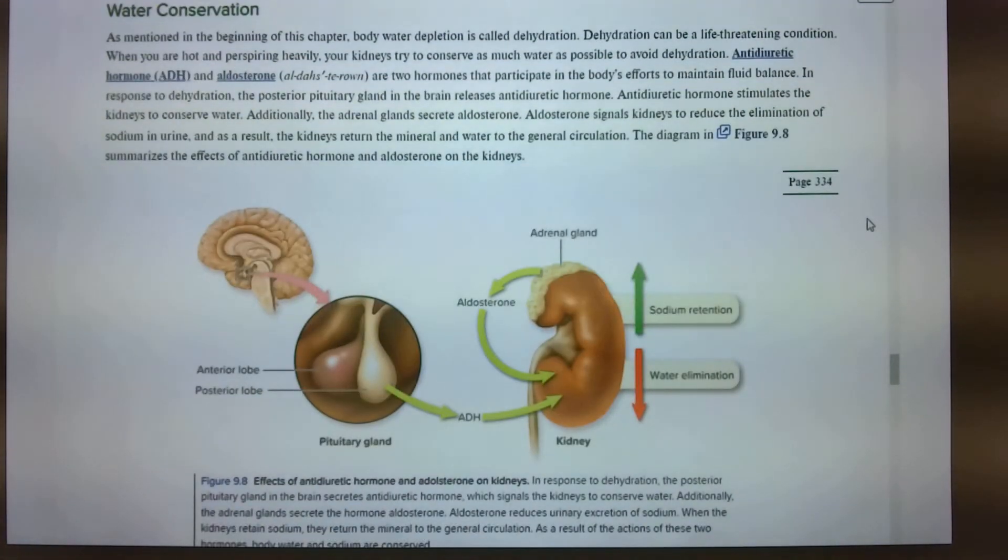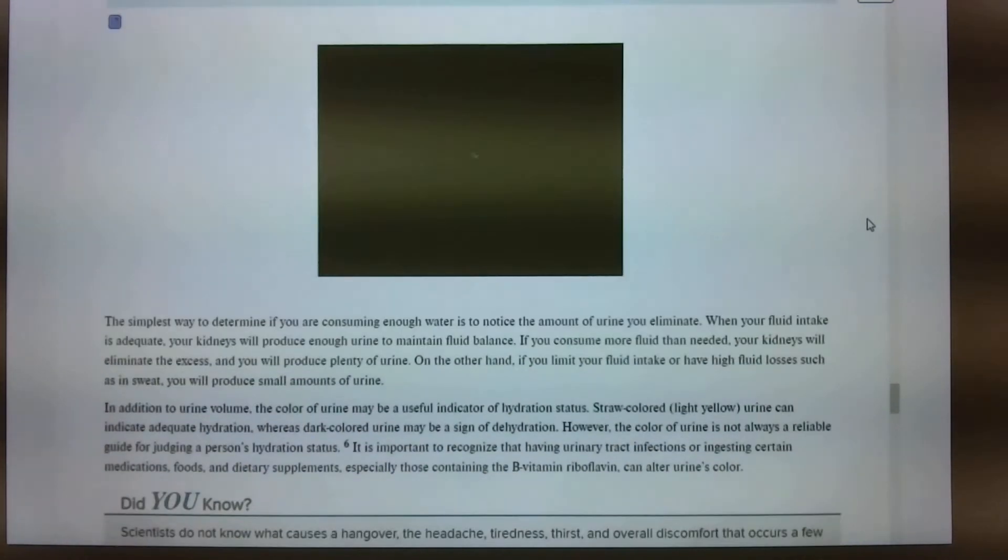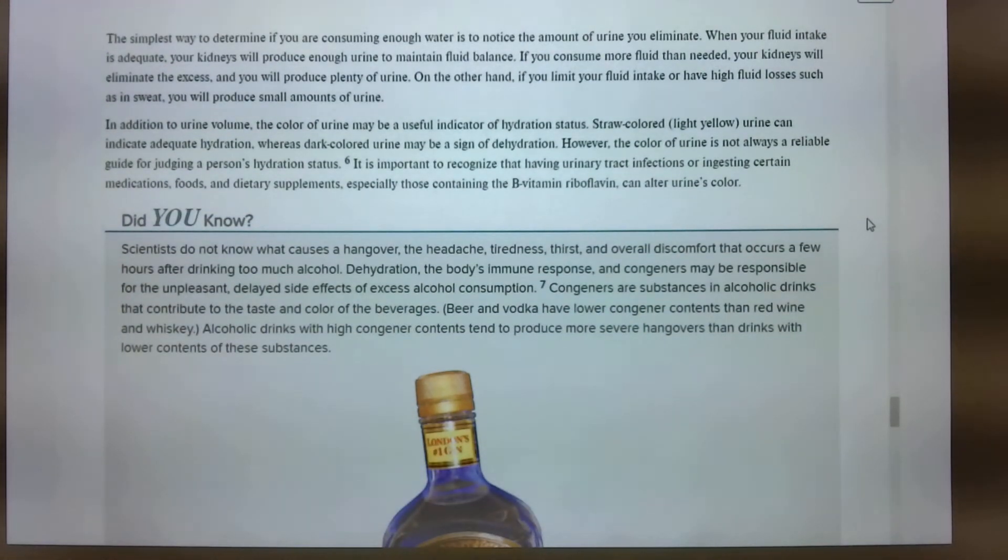Water conservation. I mentioned, I was mentioning, I don't know if I talked about, oh yeah we did. Body water, body water depletion is called dehydration. Okay? Dehydration can be a life-threatening condition. When you're hot, perspiring heavily, your kidneys try to conserve as much water as possible to avoid that. So anti-diuretic hormone, ADH and aldosterone are two hormones that participate in the body's water balance. When you feel real thirst, alcohol sometimes you disable it.